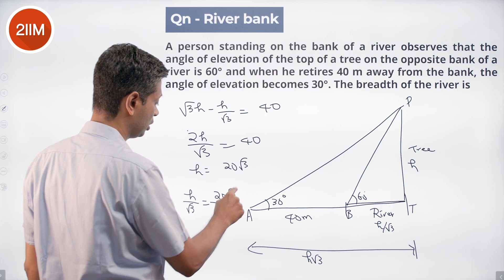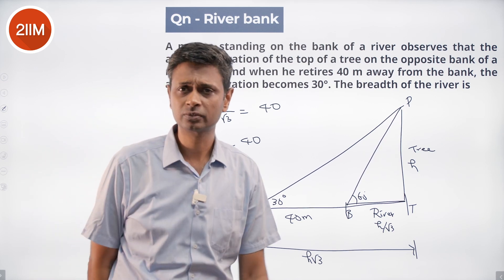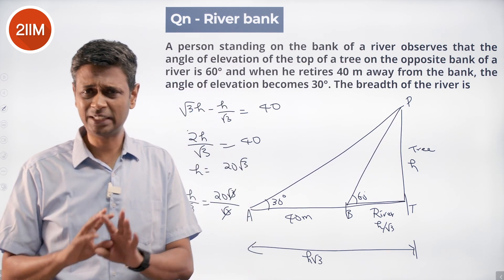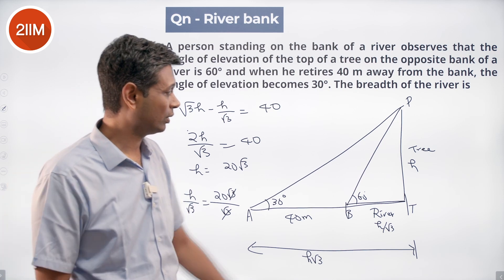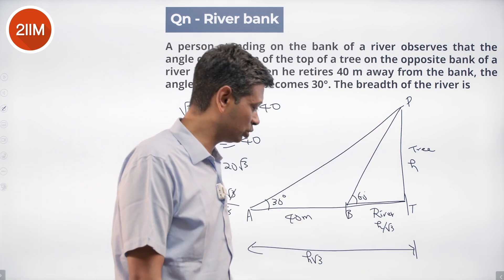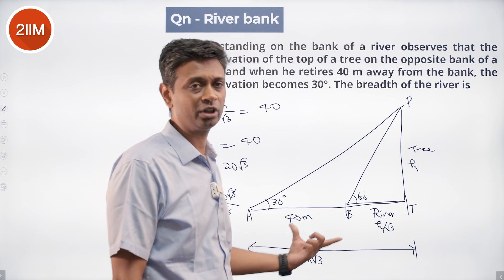Lovely question, nice and simple, nothing complicated in this at all. So height is H, this is H by root 3, this is root 3 H, difference between these two is 40, find H, then find H by root 3.